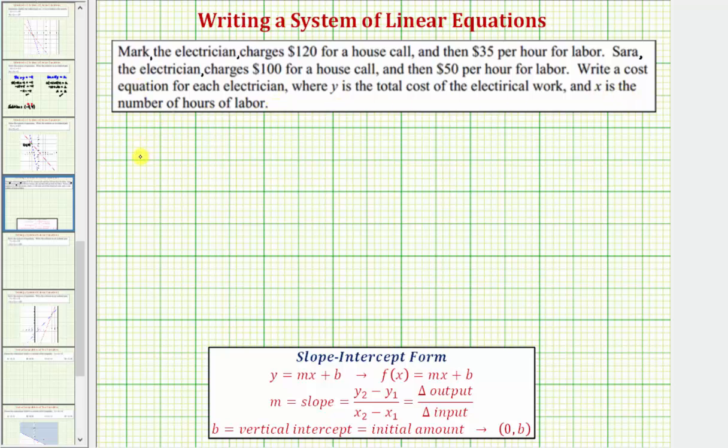So we'll have a cost equation for Mark and a cost equation for Sarah. For Mark, we'll have the equation y equals. Now looking back at the information, notice how Mark charges $120 for a house call, which is the cost just to show up, and then $35 per hour for labor.